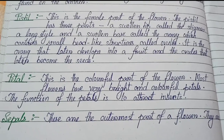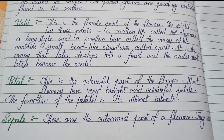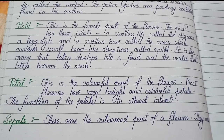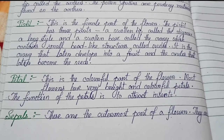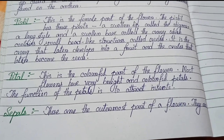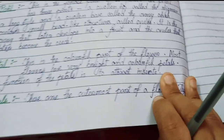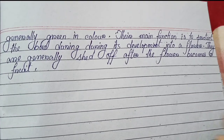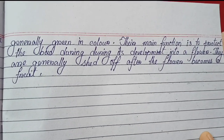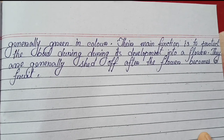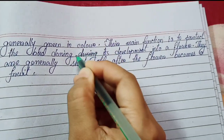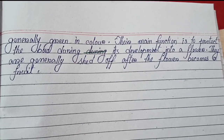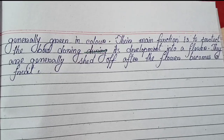Petals: this is the colorful part of the flower; most flowers have very bright and colorful petals; the function of the petal is to attract insects. Sepals: these are the outermost part of the flower; they are generally green in color; their main function is to protect the bud during its development into a flower; they are generally shed off after the flower becomes a fruit.